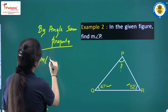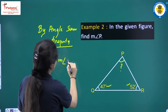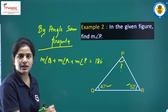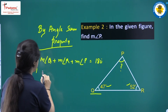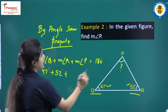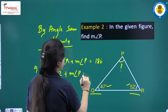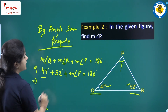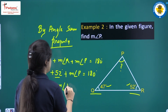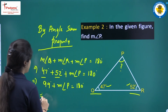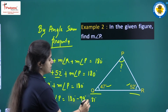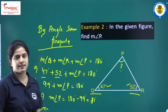By angle sum property: measure of angle Q plus measure of angle R plus measure of angle P equals 180 degrees. Substituting the known values gives 99 degrees plus measure of angle P equals 180 degrees, so angle P equals 180 minus 99 degrees, which is 81 degrees.